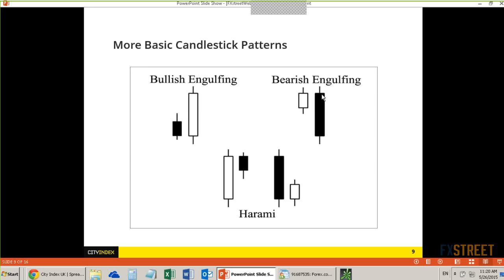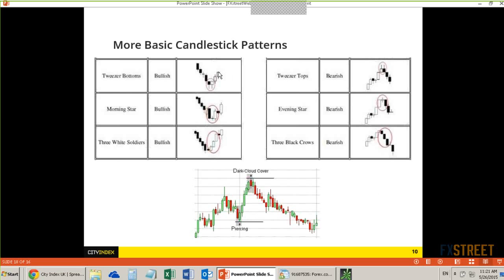Harami is sort of the opposite of the engulfing pattern — also talks about turning points and indecision. We've also got tweezer tops and bottoms, which are double tests — a double test to the downside on a tweezer bottom, a double test to the upside on a tweezer top. The morning star and the evening star involve a doji or spinning top pattern at an extreme, talking about indecision and a possible turn — an equilibrium that has been reached.